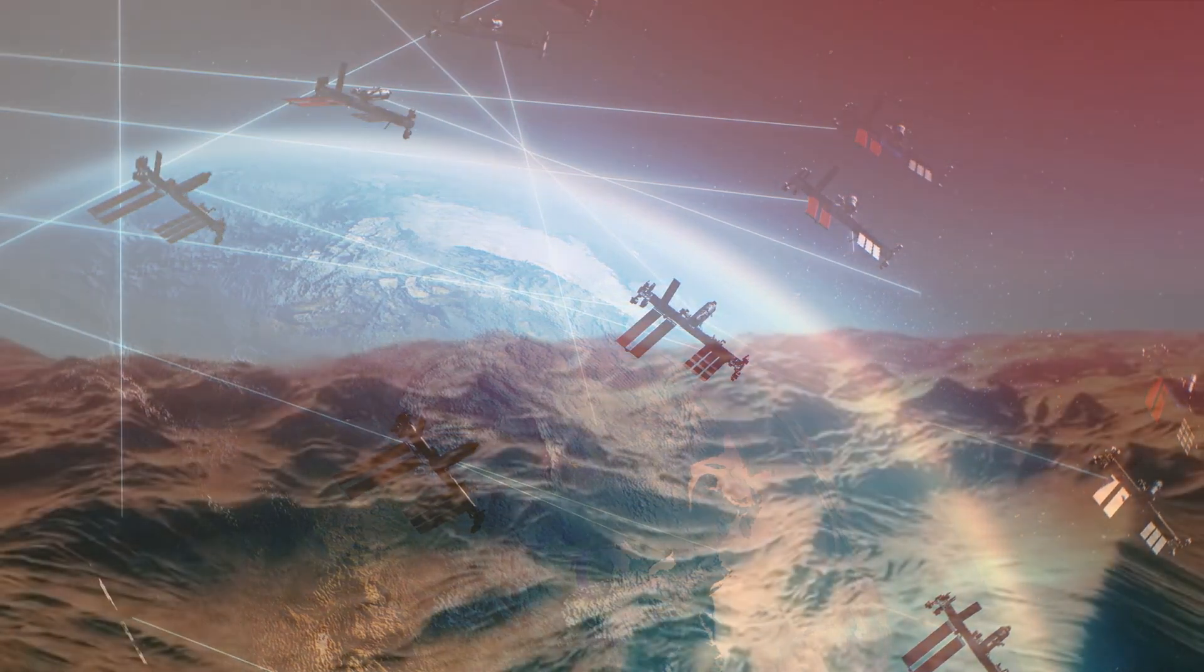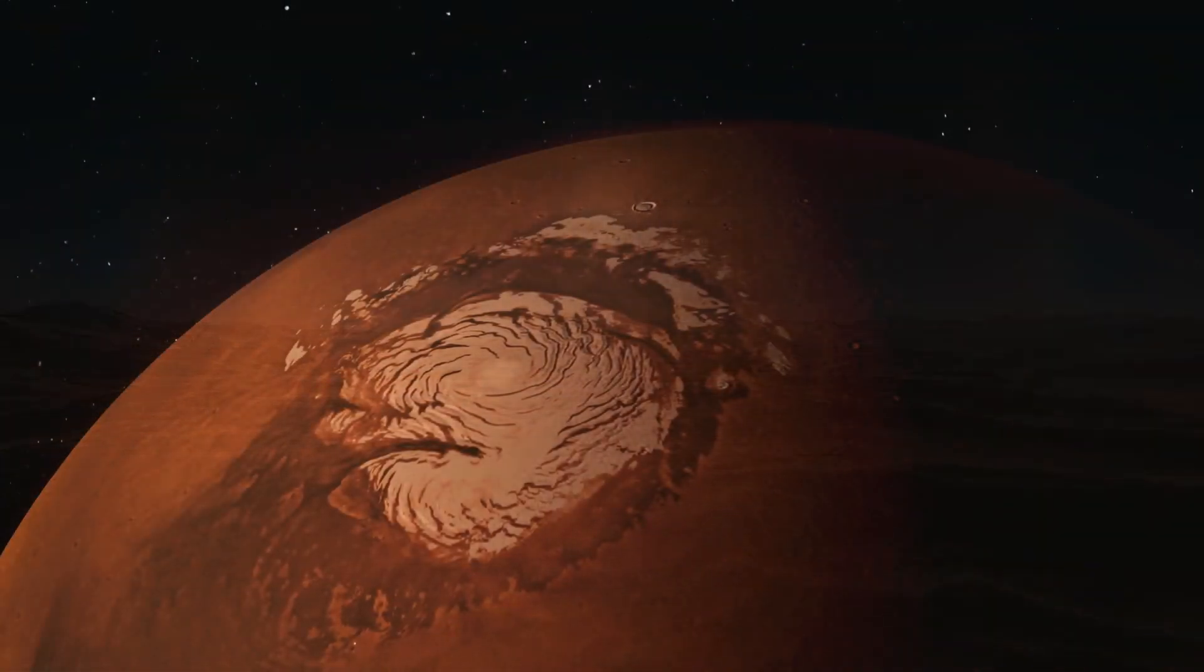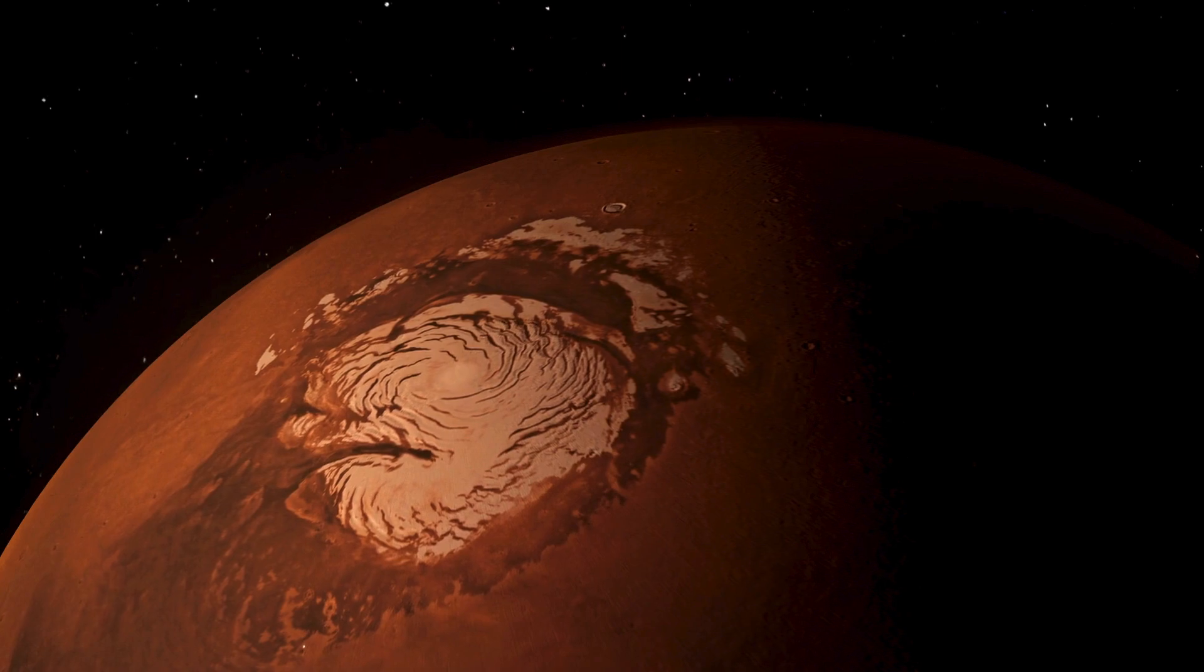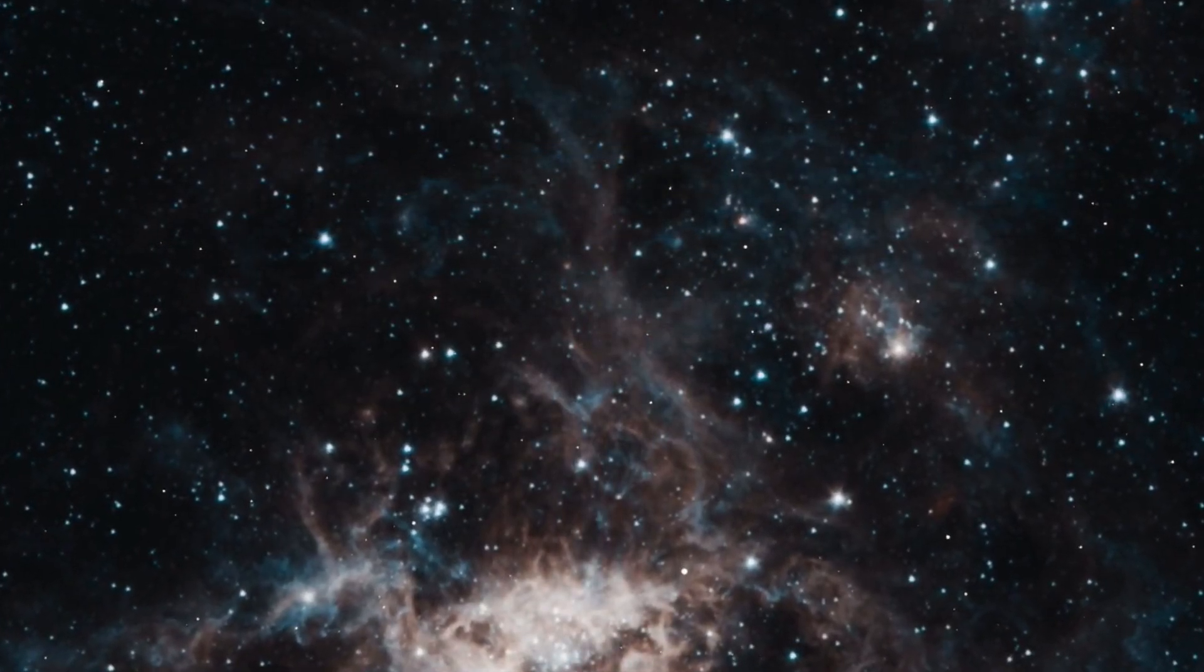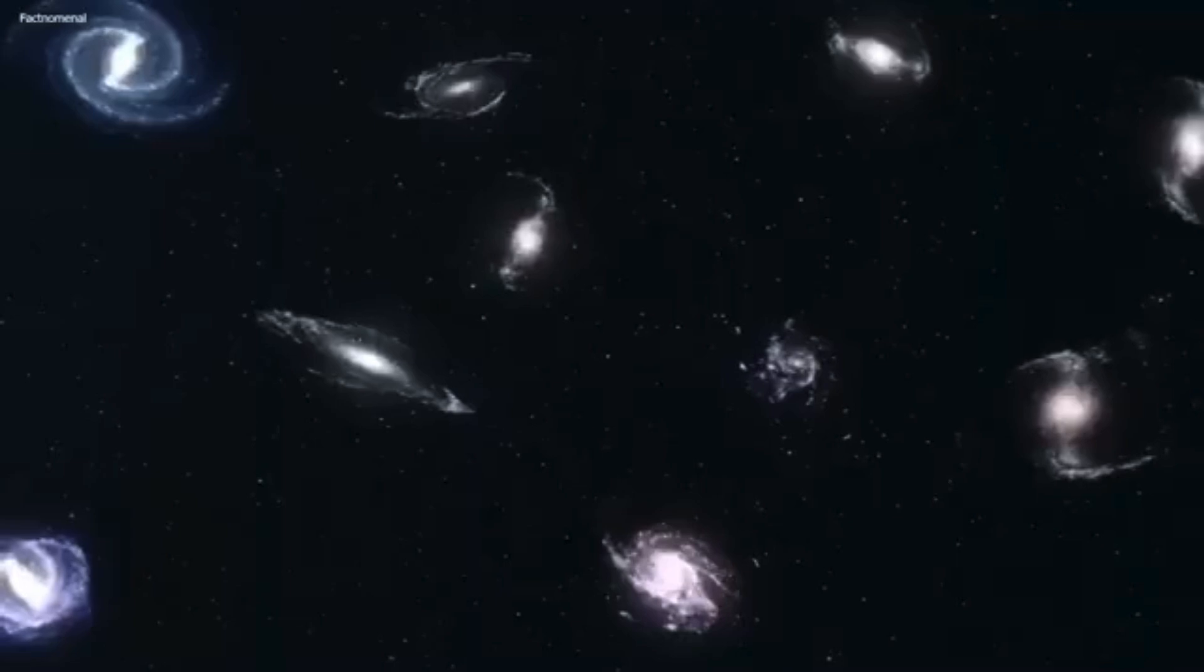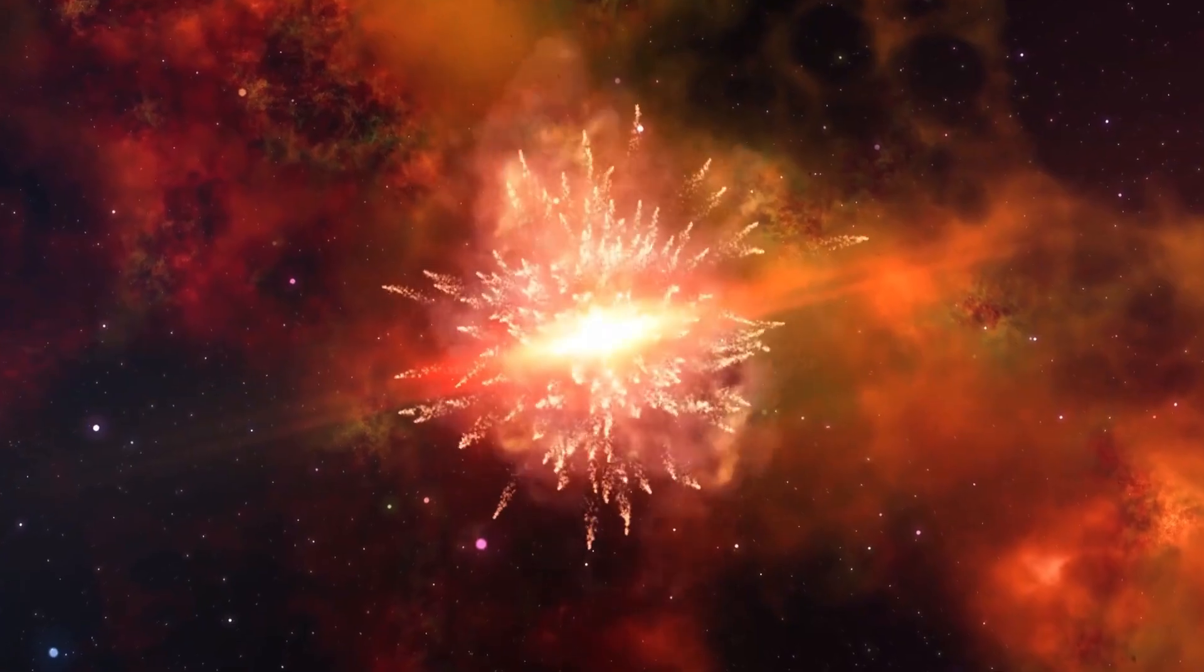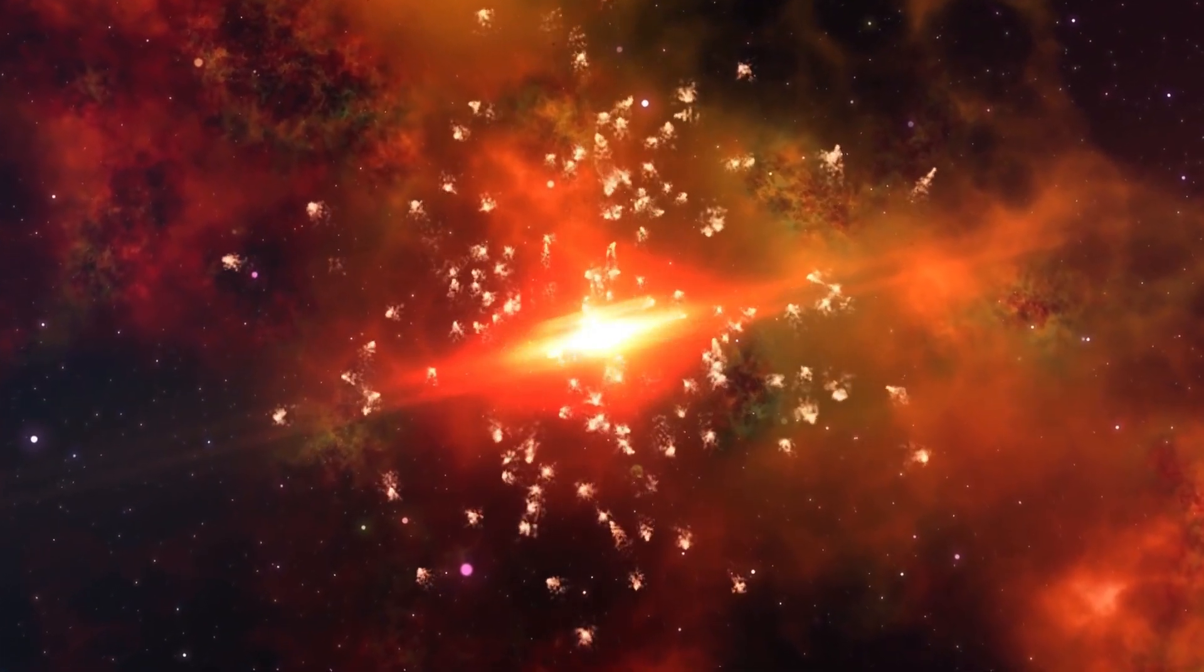Because of its proximity to Earth and its potential to harbor liquid water, Proxima b has become one of the most studied exoplanets in the search for extraterrestrial life. However, due to its distance from Earth and the glare of its host star, studying Proxima b in detail has been a challenge. That is, until the arrival of the JWST.